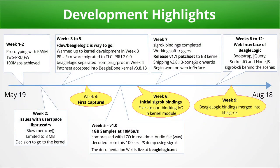Work on the web interface began in week seven. After two or three patch revisions following discussions on the mailing list, the BeagleLogic patch set was finally accepted in week nine, and from weeks eight to twelve the BeagleLogic web interface was built. It uses Node.js at the backend and Socket.io as the data link between the frontend and the BeagleBone server. The frontend is built using Bootstrap, jQuery, and the WaveDrom library for rendering logic samples. The web backend uses SigRok CLI behind the scenes, whose ASCII output has almost one-to-one correspondence with WaveDrom syntax.